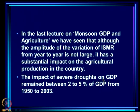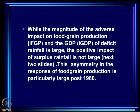In the last lecture on monsoon, GDP and agriculture, we saw that although the amplitude of year-to-year variation of ISMR is not large, it has a substantial impact on agricultural production and GDP. The impact of severe droughts on GDP remained between 2 to 5 percent from 1950 to 2003. While the adverse impact on food grain production and GDP of deficit rainfall is large, the positive impact of surplus rainfall is not large.